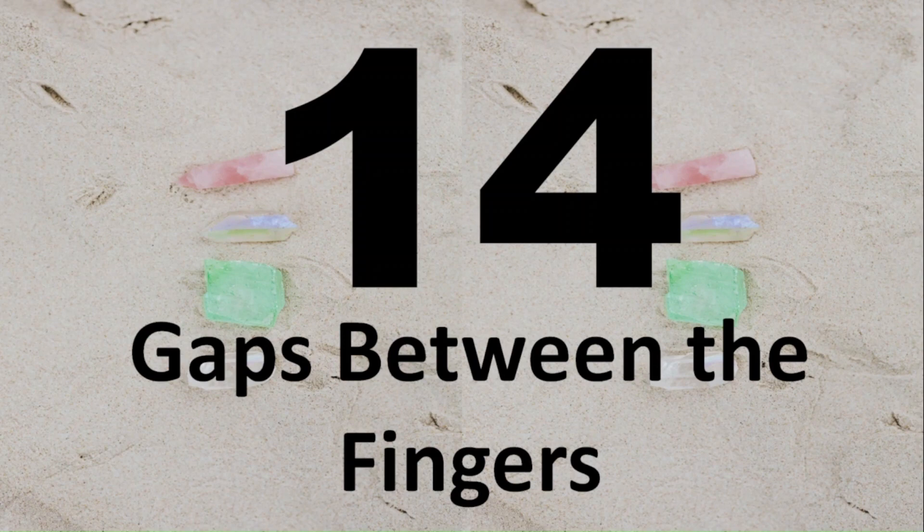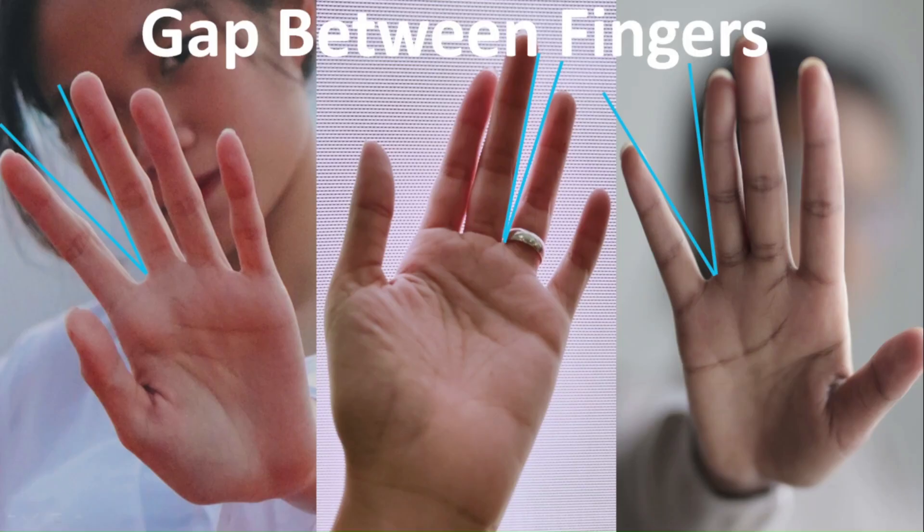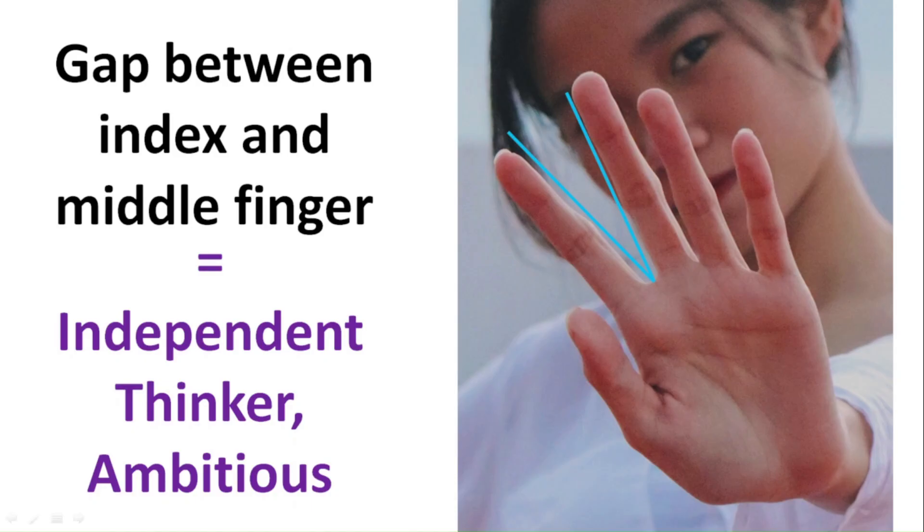Number 14, gaps between the fingers. There are three places to look for gaps between the fingers. First is the gap between the middle and index finger. If you have a gap here, you are an independent thinker and ambitious. If the gap is smaller than the spacing between your other fingers, then you probably don't like to take the lead or be in the spotlight.